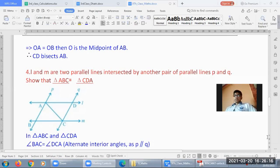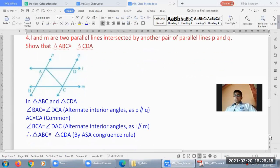I will note that in triangle ABC and triangle CDA, angle BAC equals angle DCA as alternate interior angles. So if you have two parallel lines P and Q, with AC as the transversal line, then angle BAC equals angle DCA.